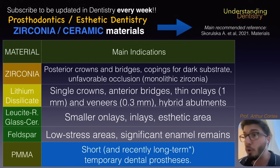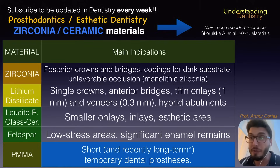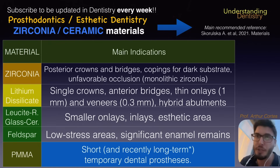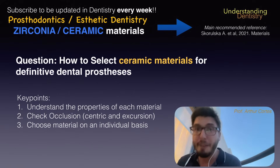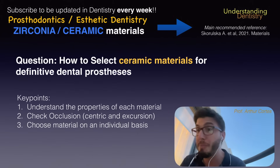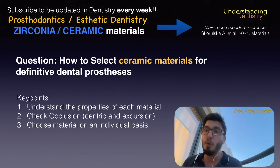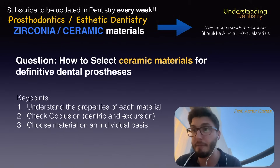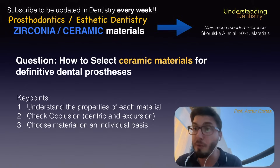You are also going to choose the material based on other factors like cost for the patient, the esthetic characteristics of the patient, and the antagonist arch — whether it's zirconia crowns, a partial removable denture, etc. All of this will affect the indications for your case. The first key point is to understand the properties of each material — refer to this table, or to our book, which has an important chapter on prosthodontics for digital dentistry covering these contents. Then check the occlusion really carefully.